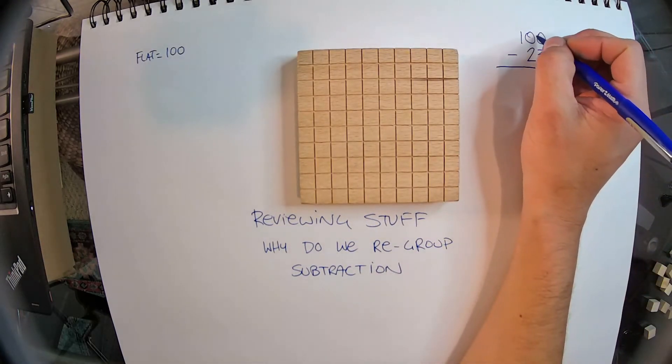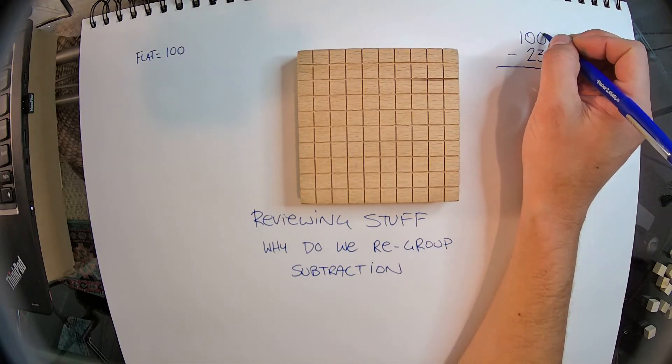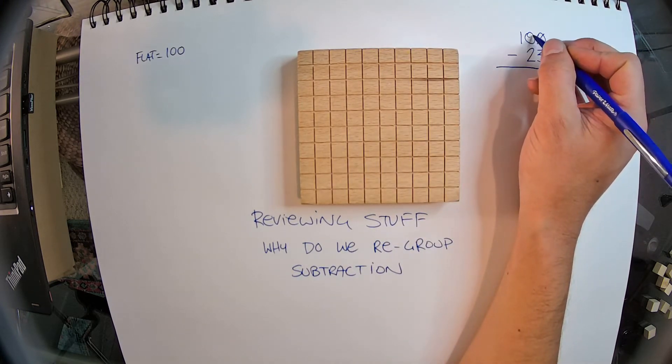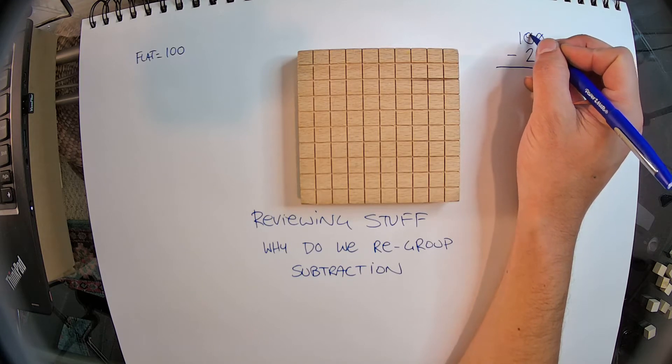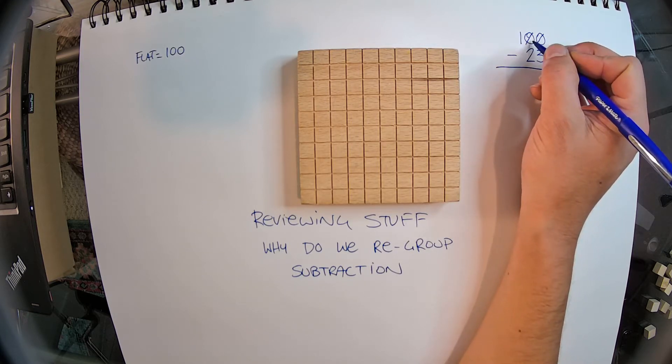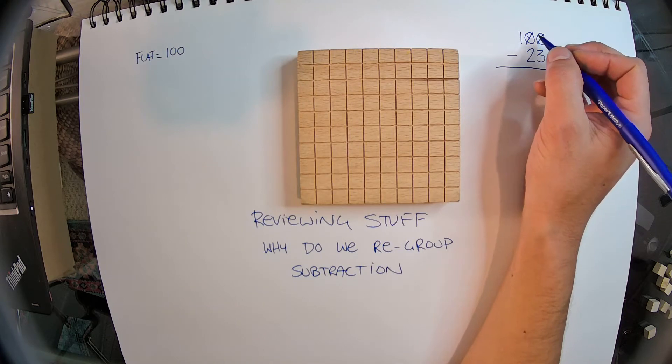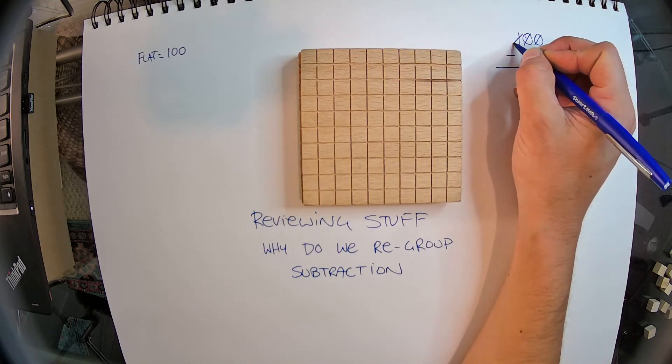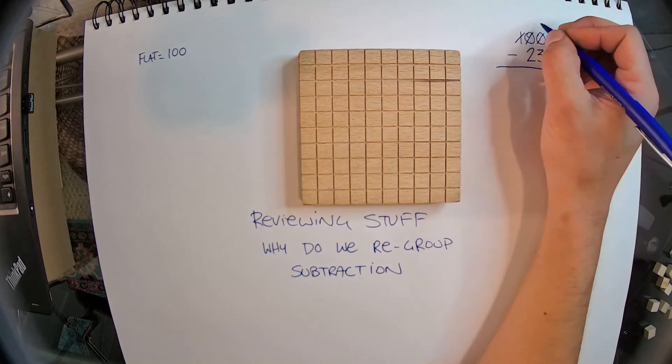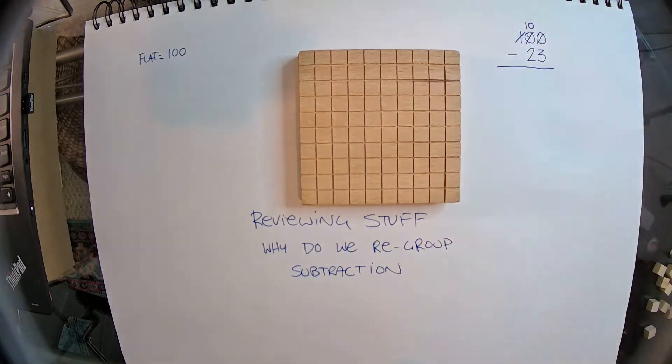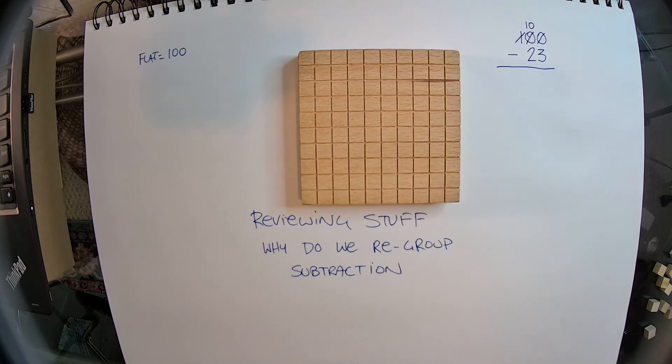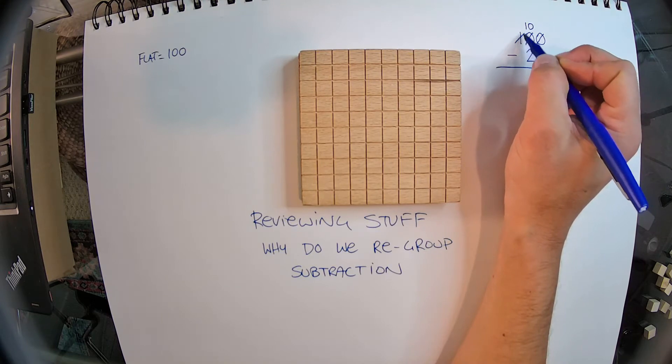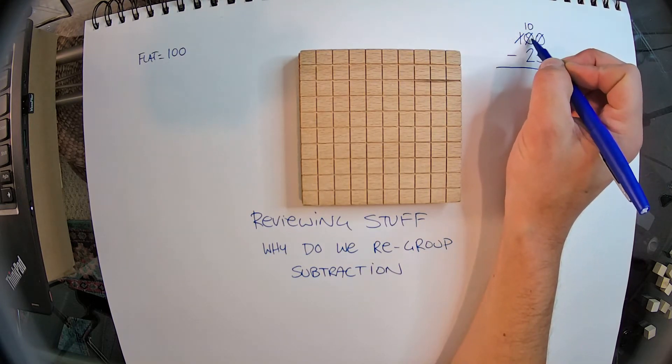I have to borrow from the tens place. So, can I borrow from the tens place though? There's nothing there. So to make tens, I have to borrow from the hundreds place. The first thing that we do is we're going to get 10 tens. So we take away from there, we subtract the 1, and we add 10 over here.